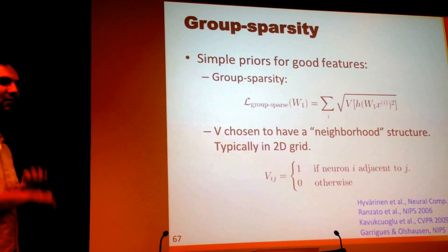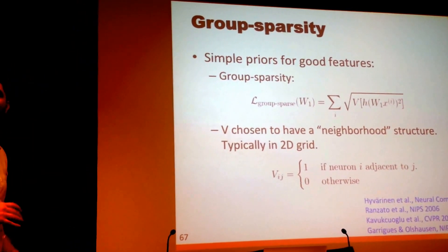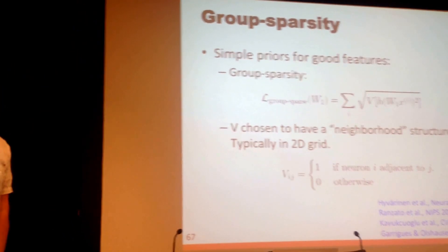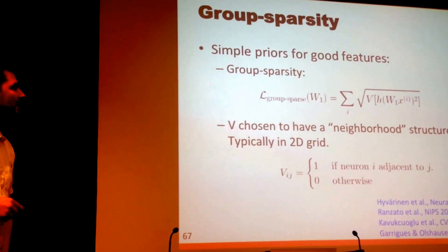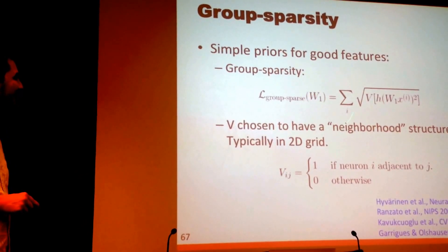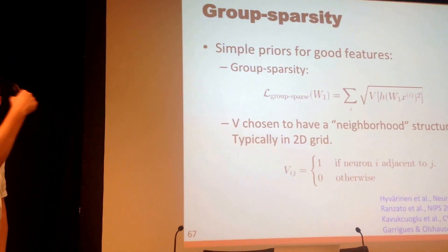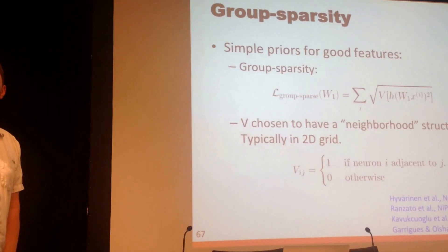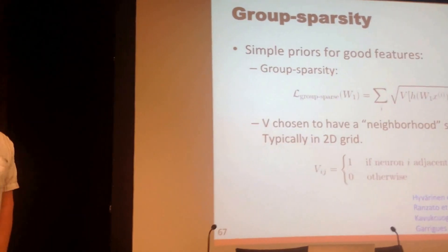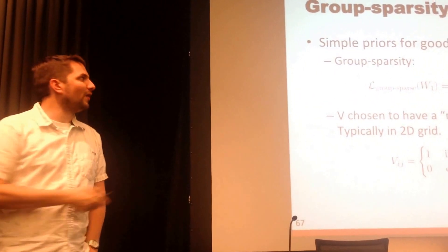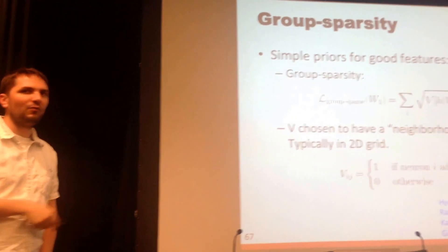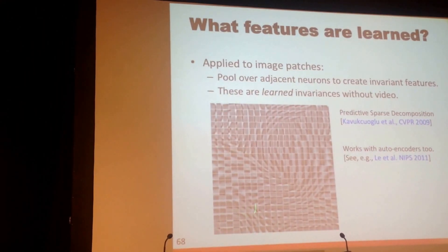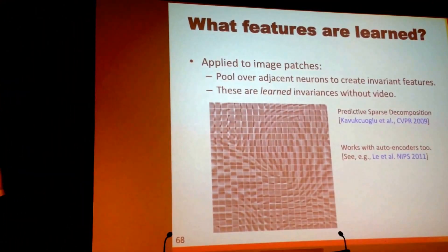This is just another prior about how we think neurons ought to behave and what makes good features. The really neat thing about this is that if you do that sparse autoencoder — take that sparsity penalty and throw it away and drop this one in its place — you get features that look like this.